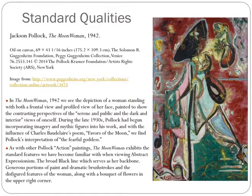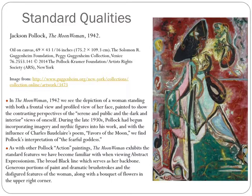In the Moon Woman from 1942, we see the depiction of a woman standing with both a frontal view and profile view of her face, which shows the contrasting perspectives of the serene in public and the dark in interior views of oneself. During the late 1930s, Pollock had begun incorporating imagery and mythical figures into his work. And with the influence of Charles Baudelaire's poem Favors of the Moon, we find Pollock's interpretation of the fearful goddess. As with other Pollock action paintings, the Moon Woman exhibits the standard features of Abstract Art: the broad black line which serves as her backbone, dramatic brushstrokes of generously applied paints, and the disfigured features of the woman.